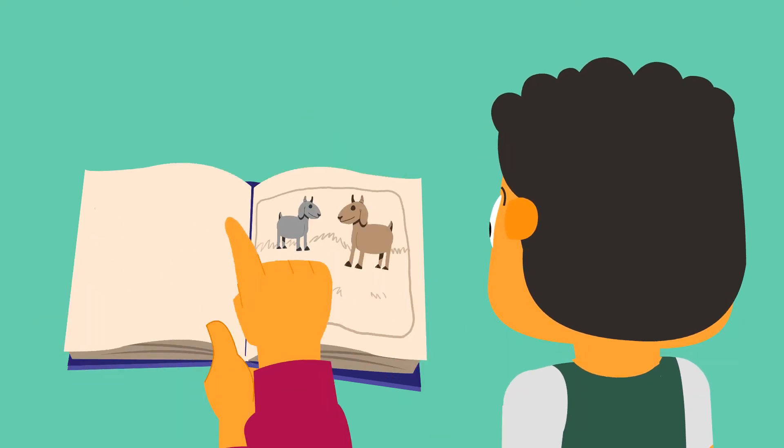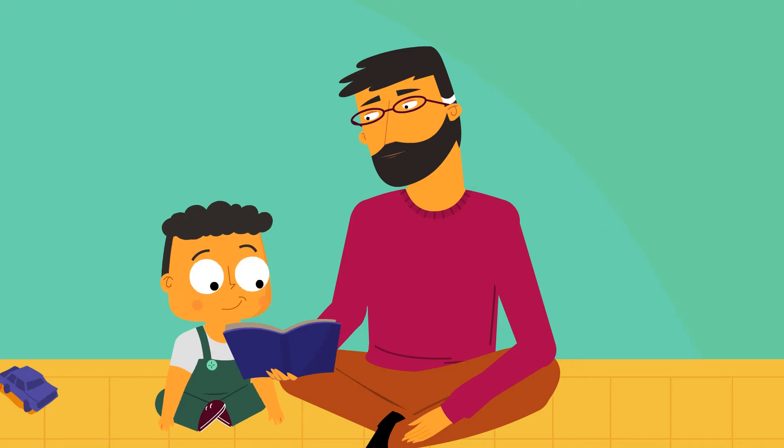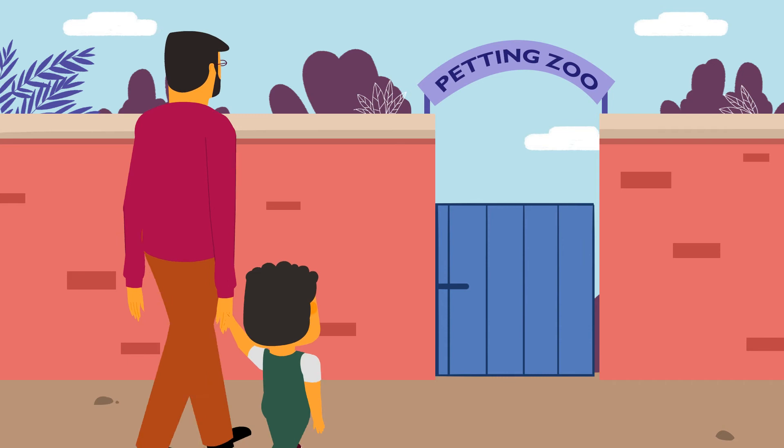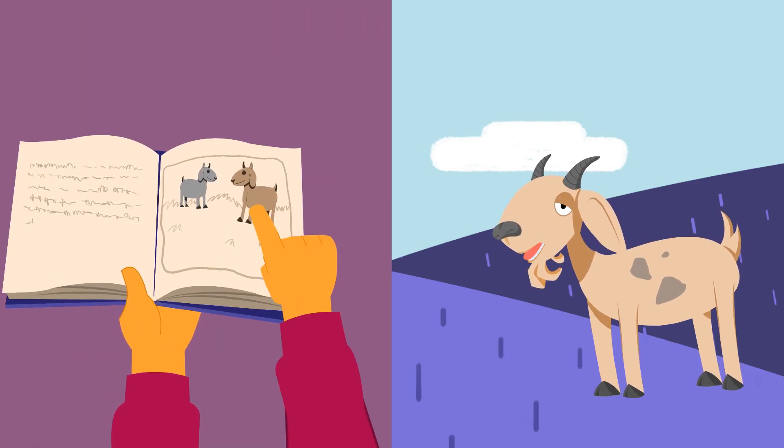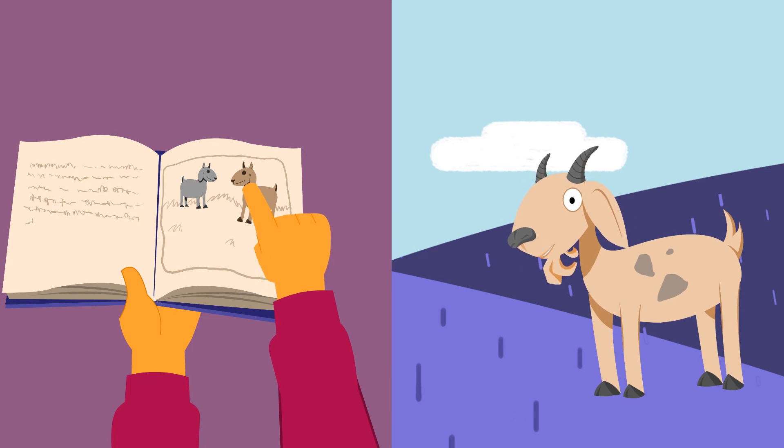If it's a goat, perhaps read a story about a friendly, talking goat together, or take him to a petting zoo. Be sure to point out the similarities. See how this goat is talking? So is the other goat in the story. It means he wants to play.